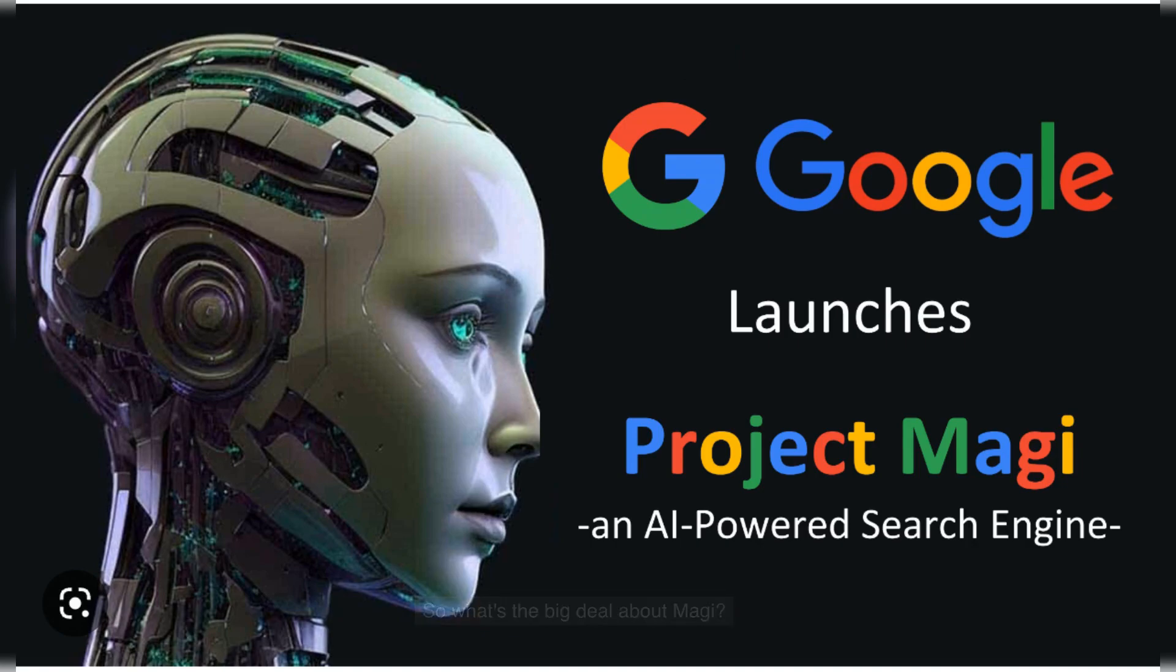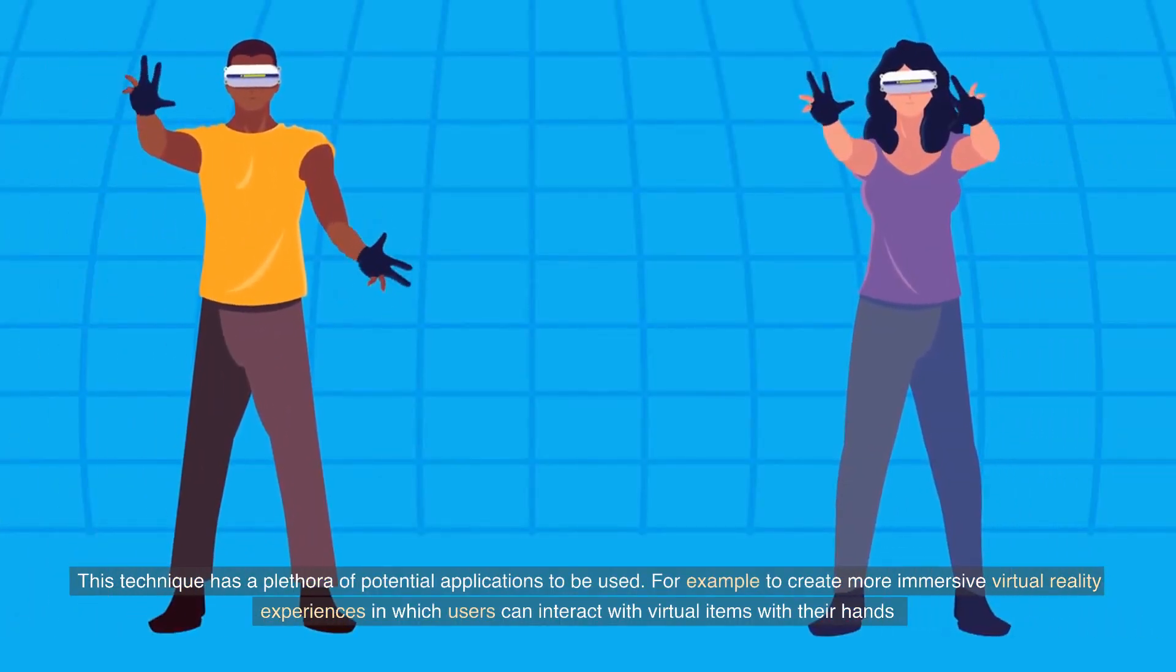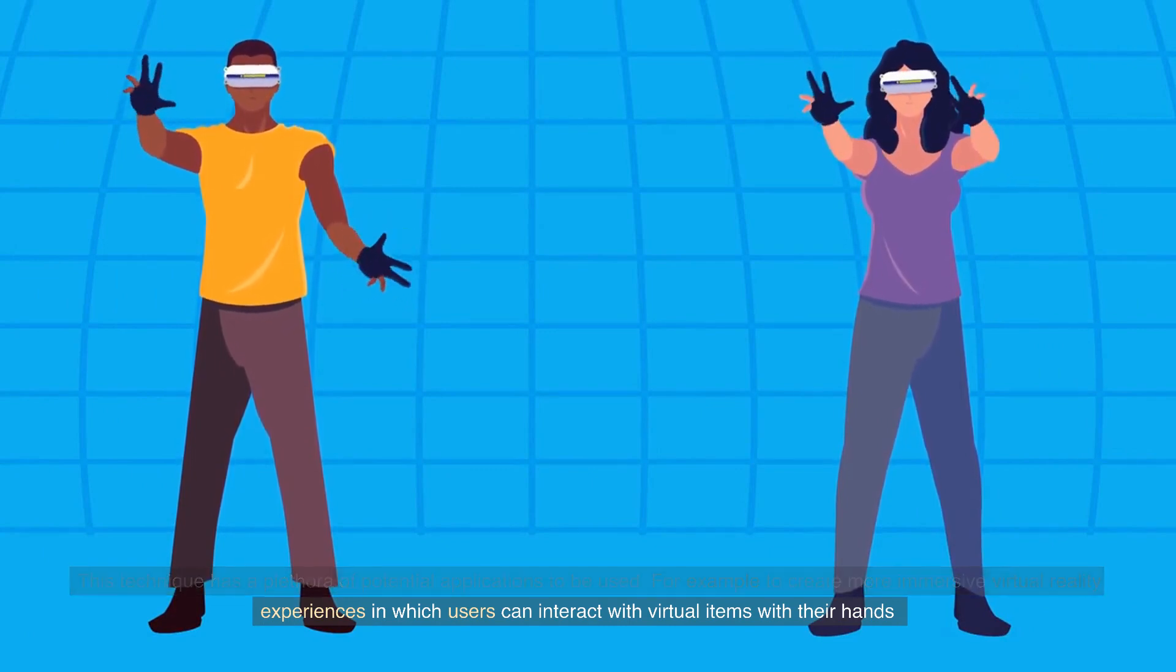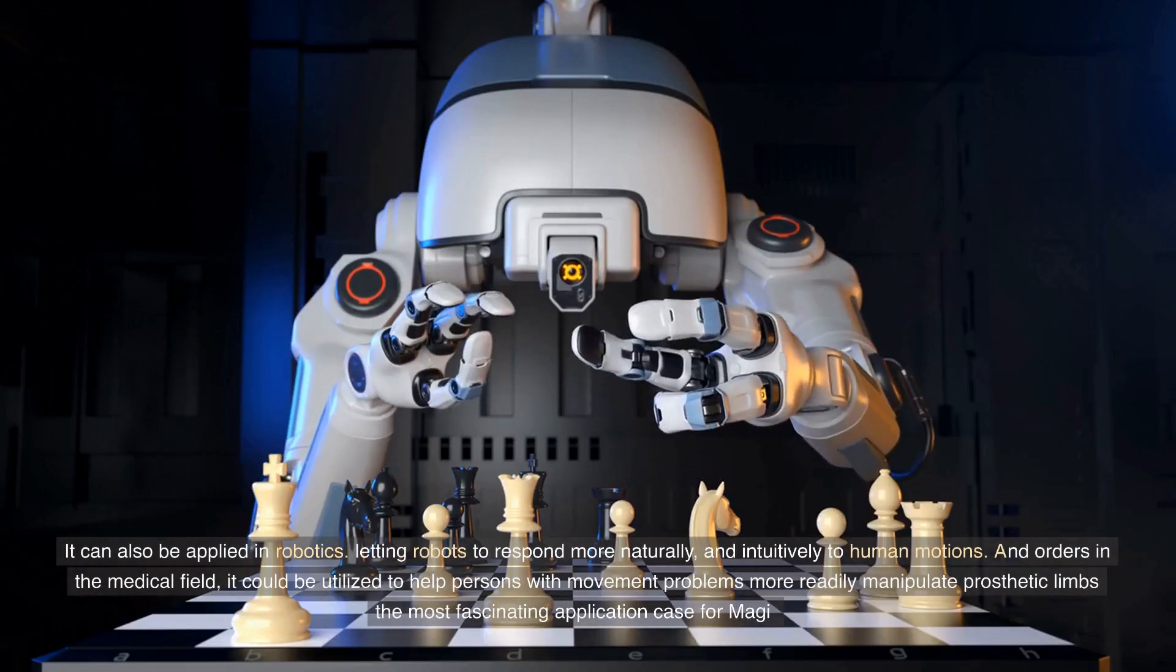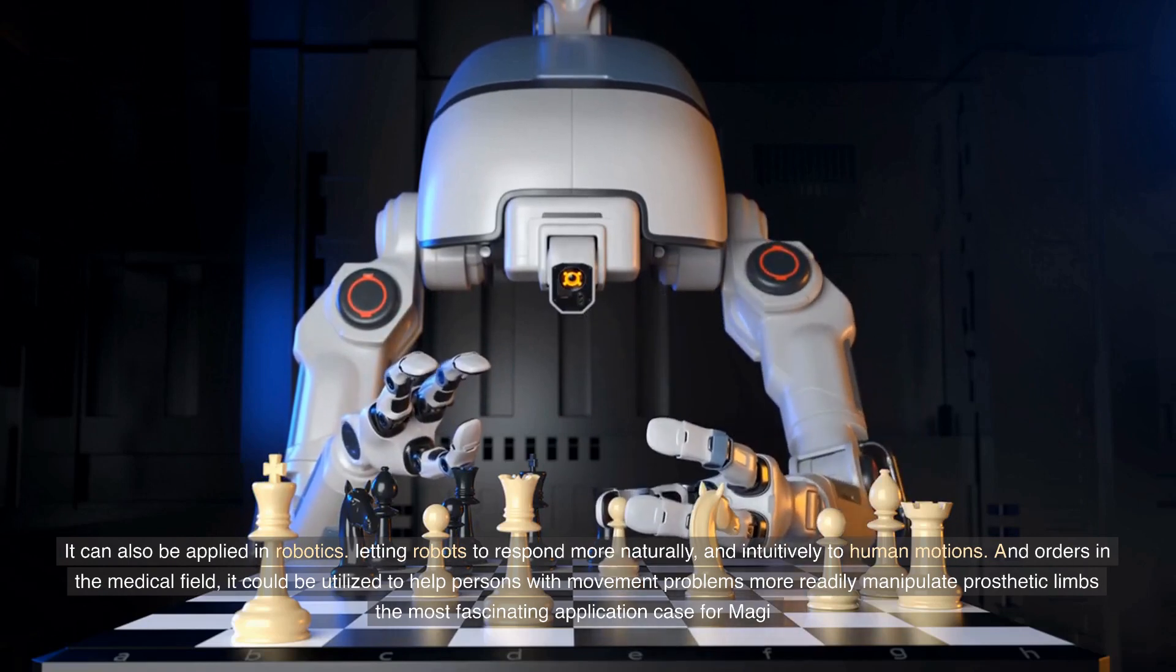So what's the big deal about Magi? This technique has a plethora of potential applications to be used. For example, to create more immersive virtual reality experiences in which users can interact with virtual items with their hands. It can also be applied in robotics, letting robots to respond more naturally and intuitively to human motions.